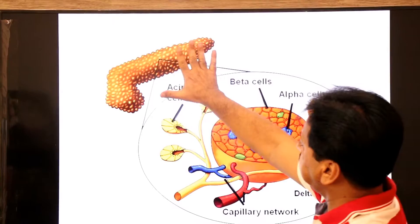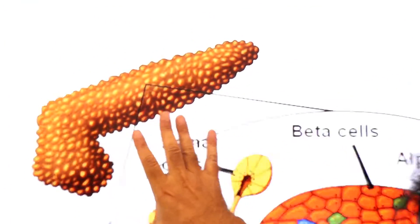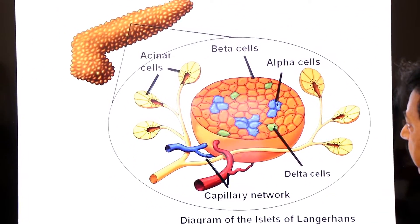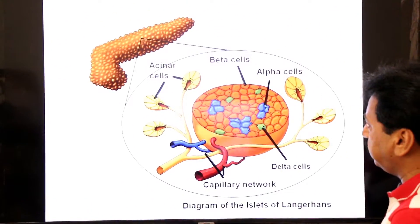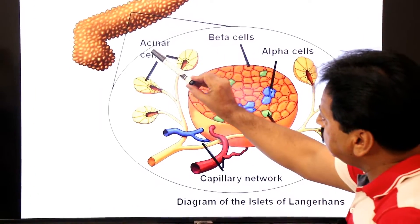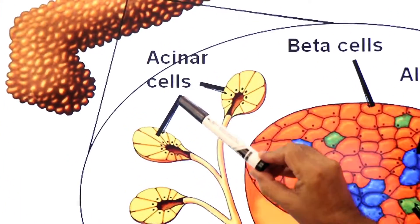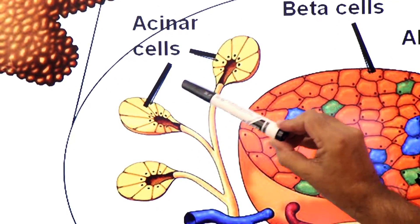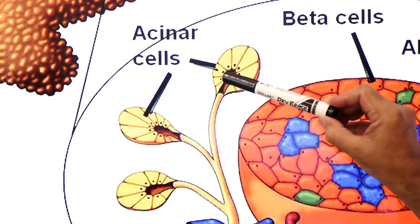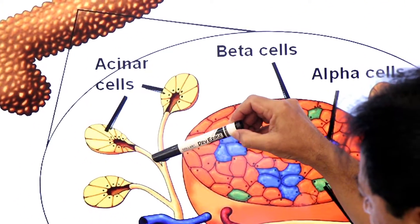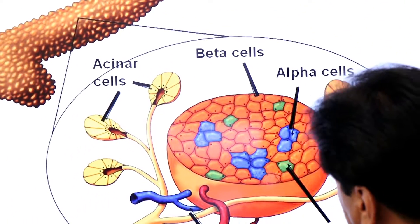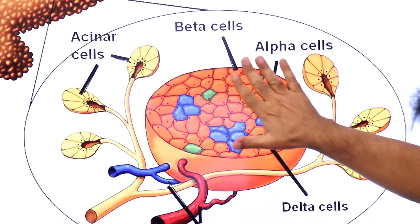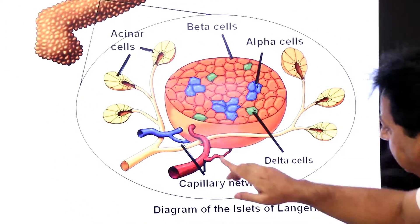Here you see this is the pancreas, showing both parts — exocrine part and endocrine part. Here you see acinar cells and ducts. This is the exocrine part of pancreas which releases digestive enzymes into the ducts. But this is the endocrine part of pancreas.